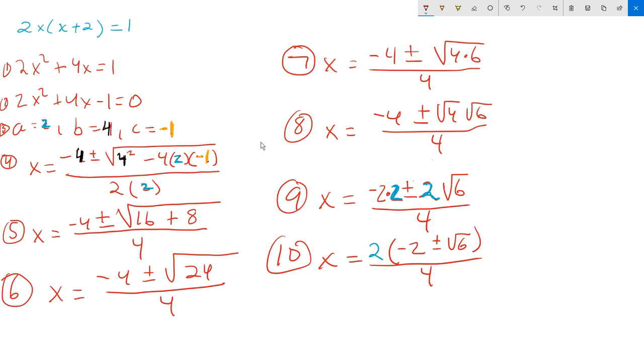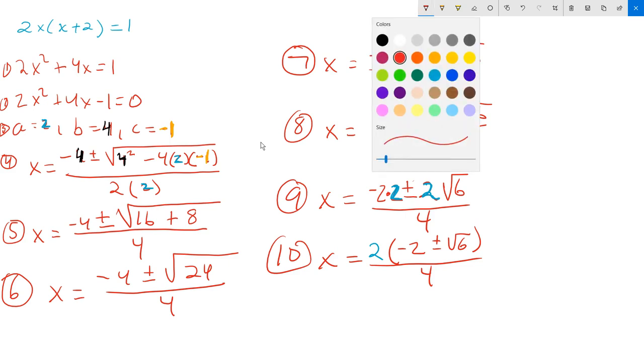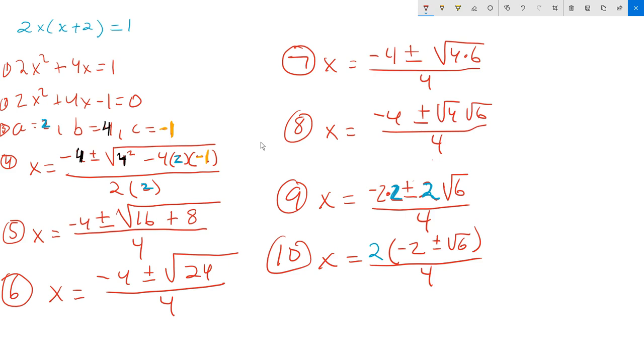So the 4 in the bottom of step number 10, I'm going to rewrite that as 2 times 2. And I'm doing that because then I'll be able to cancel off easily. Once you know that, then you can just cross off as follows. This 2 divides away with that 2. And therefore, at the very end, at step 11, what remains will be x = (-2 ± √6) / 2.